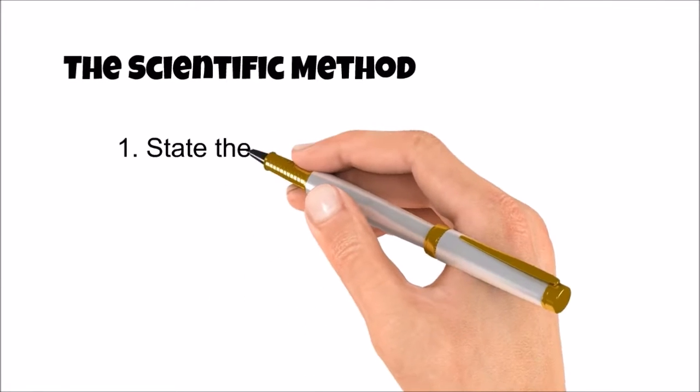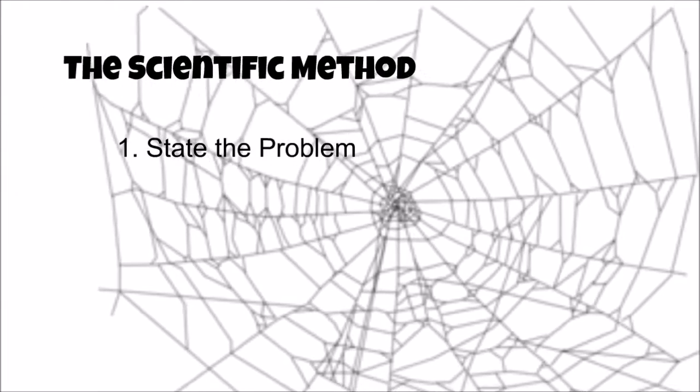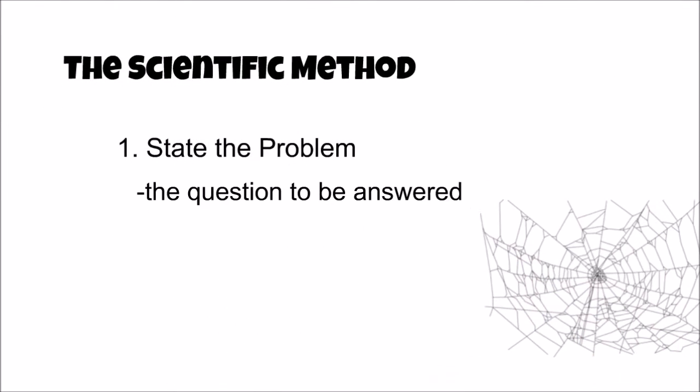The first step of the scientific method is to state the problem, and if you're a butterfly, spider webs are the problem. The problem is a question that you want answered.